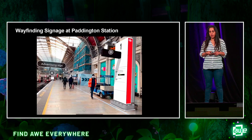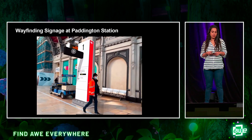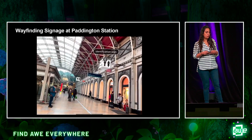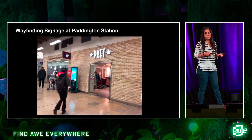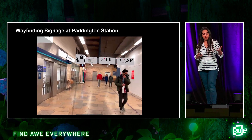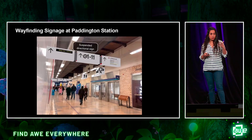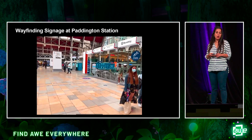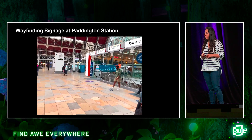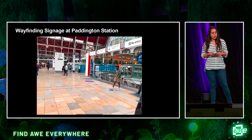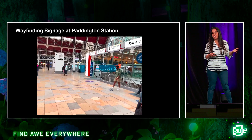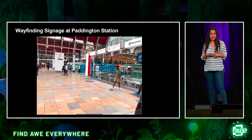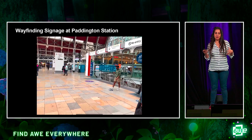At Paddington Station, we built a prototype to visualize the new wayfinding signage that was being developed. The project explores how future stations can be easily modified by using augmented reality as a design tool that allows station managers an easy and intuitive way to place wayfinding signage and helping them to make informed decisions. Although we managed to position and place these signs fairly accurately across the station, what we didn't anticipate was trying to get a clear camera feed at peak travel times.